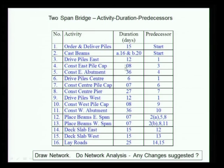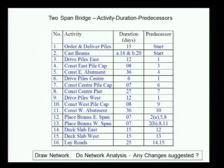What we need to do is look at the durations we have discussed. In the beam casting, for example, I have given you A and B which is for the first set of three and the second set of three. Now I want to take this up for discussion. Let us look at the predecessors — we have started discussing this in the earlier lecture but will take it up now. We have: order/deliver piles start, cast beams start — there is no predecessor as such.